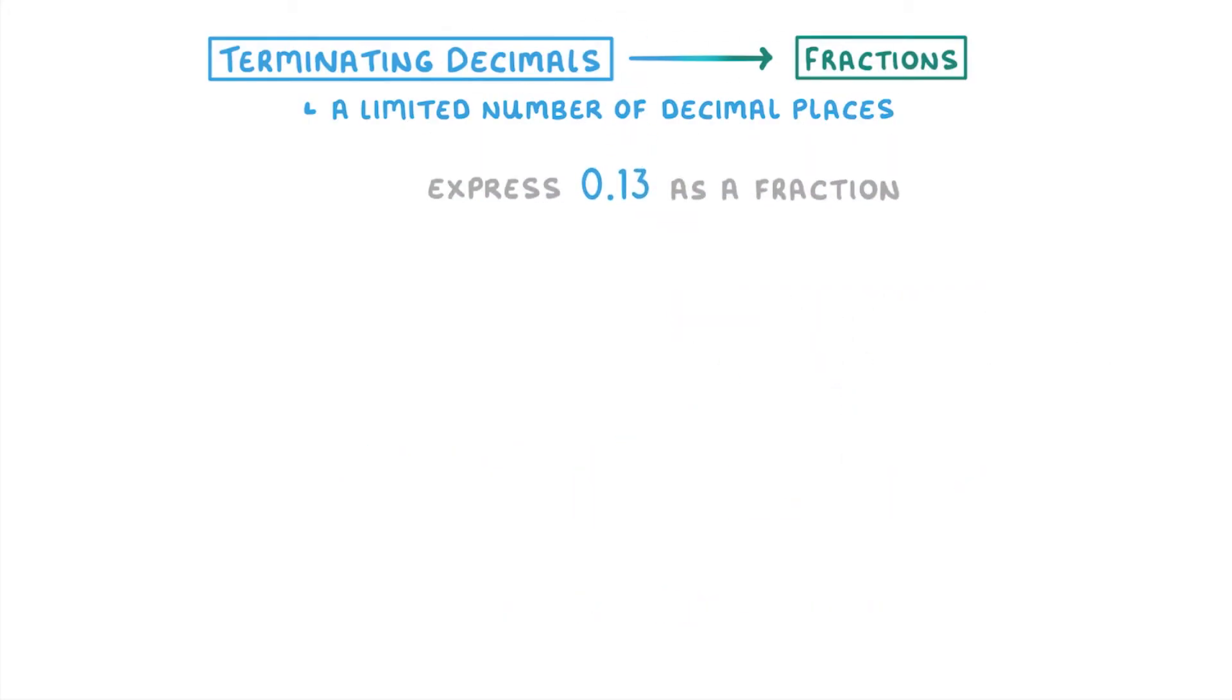Similarly, if we were asked to express 0.13 as a fraction, we'd start by taking that 1, 3, and making it the numerator of a fraction. Then we'd put a 1 on the bottom, and think about how many zeros we need to add to it.